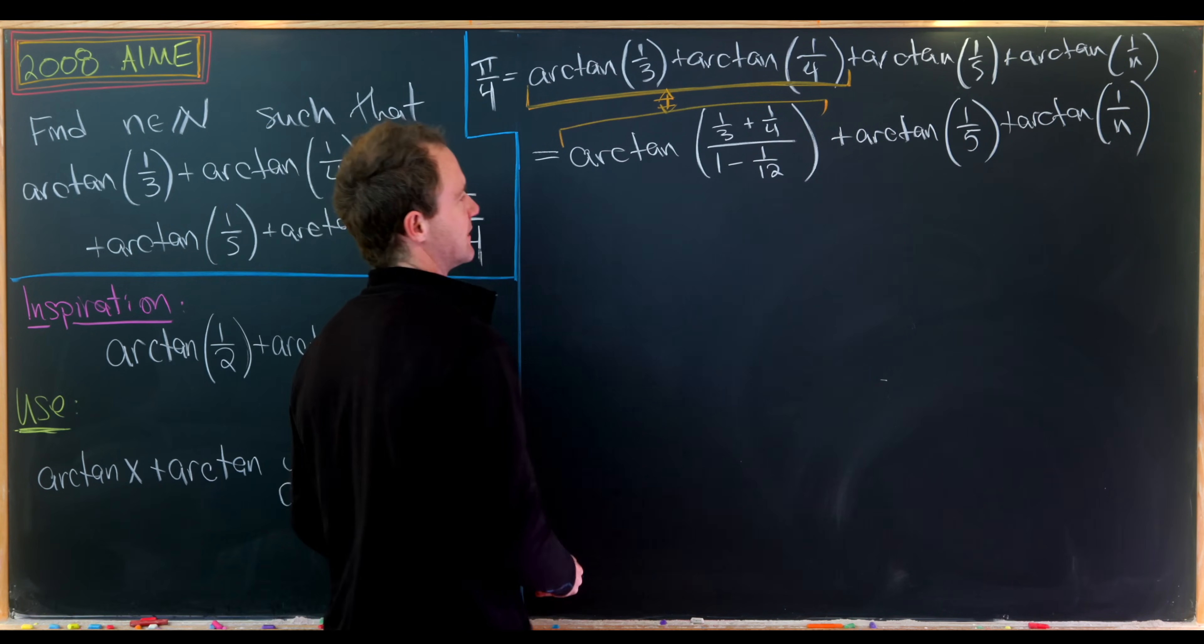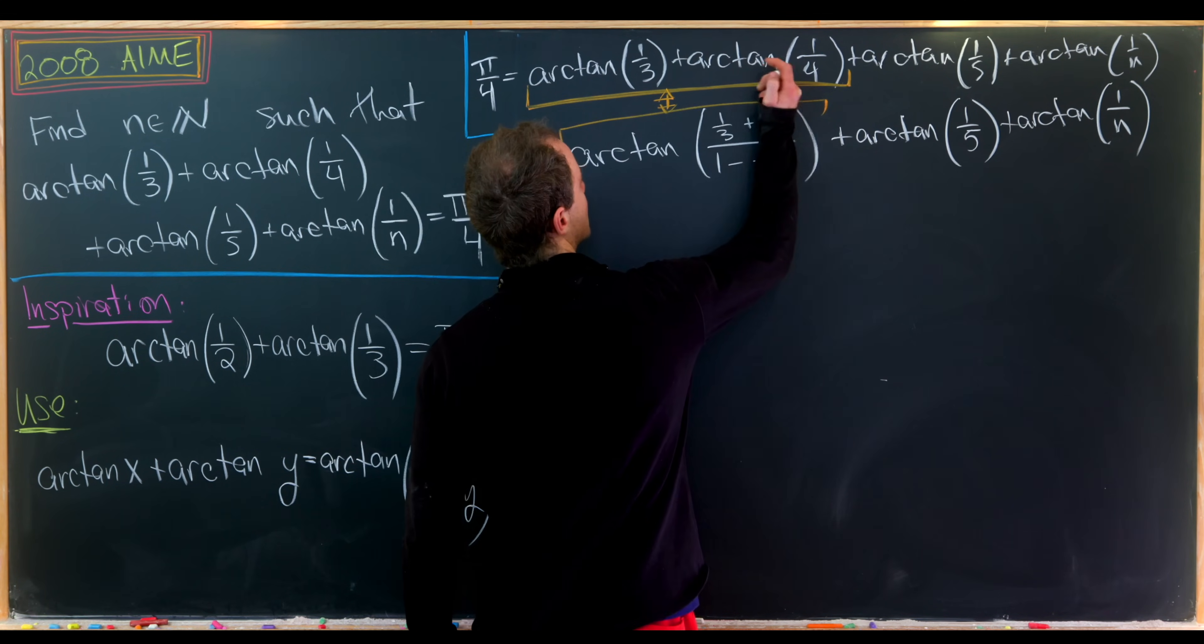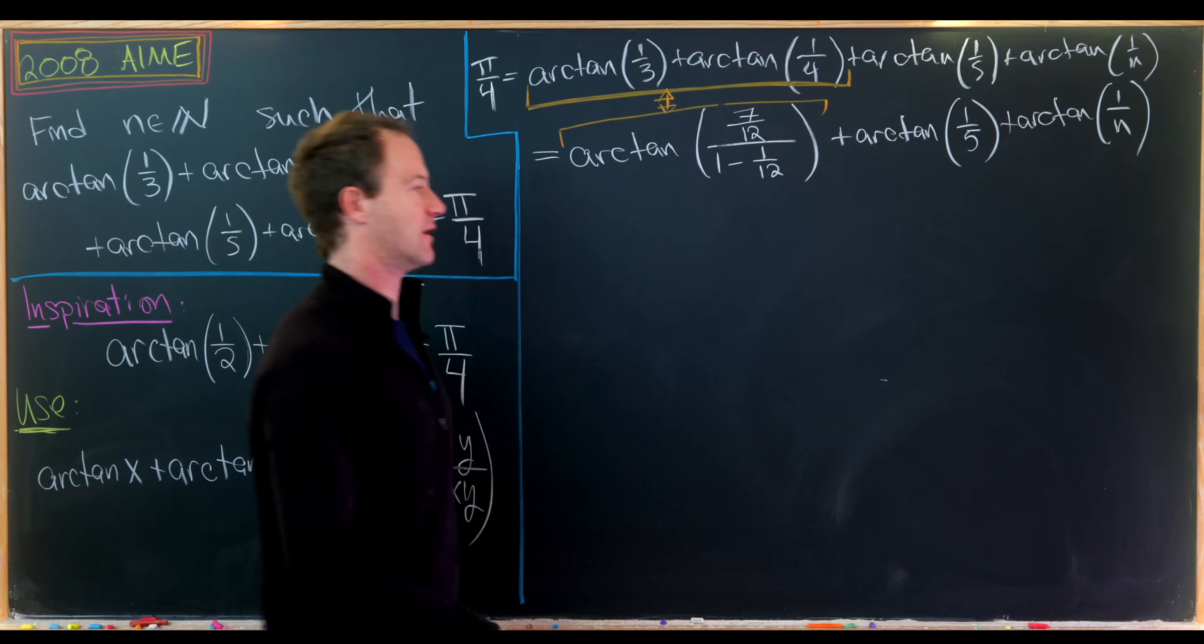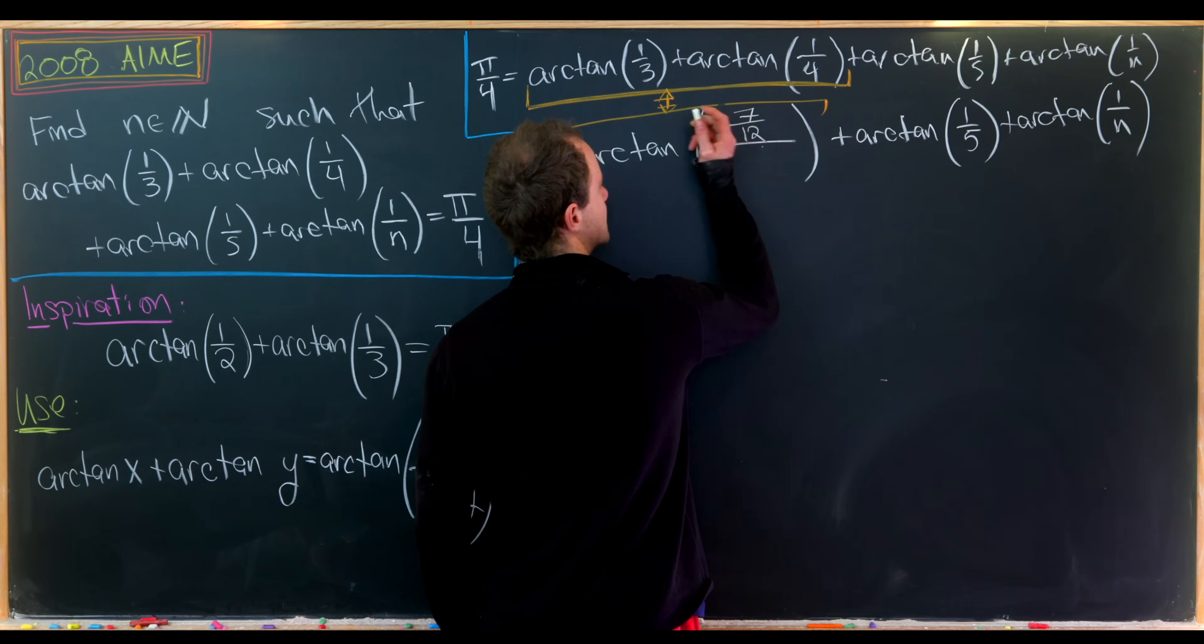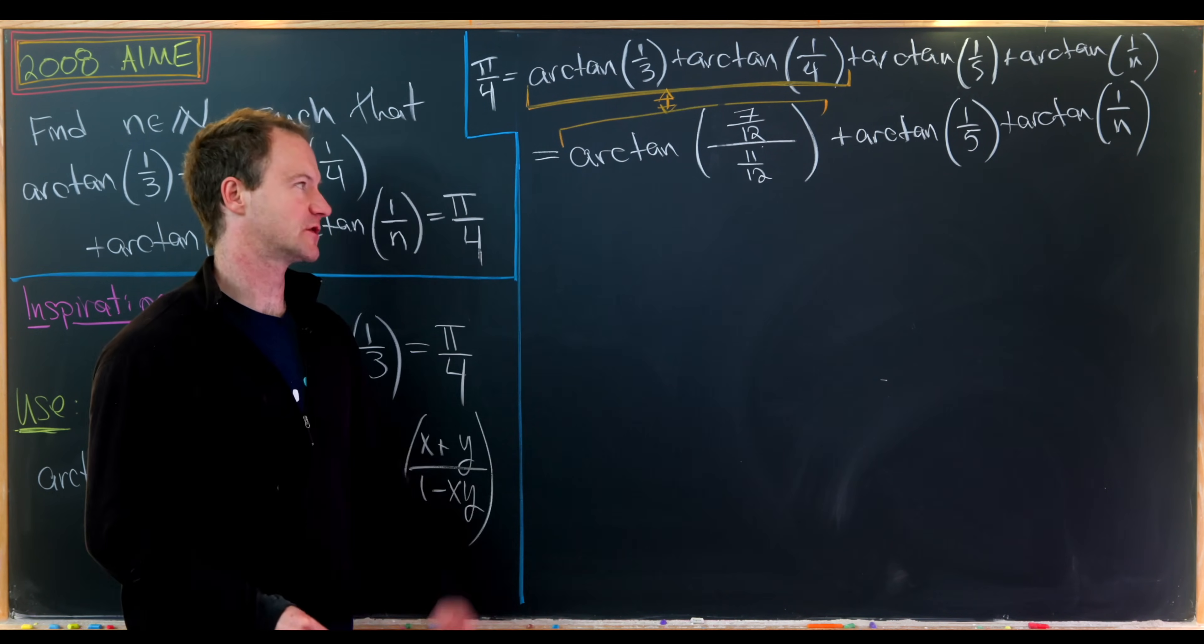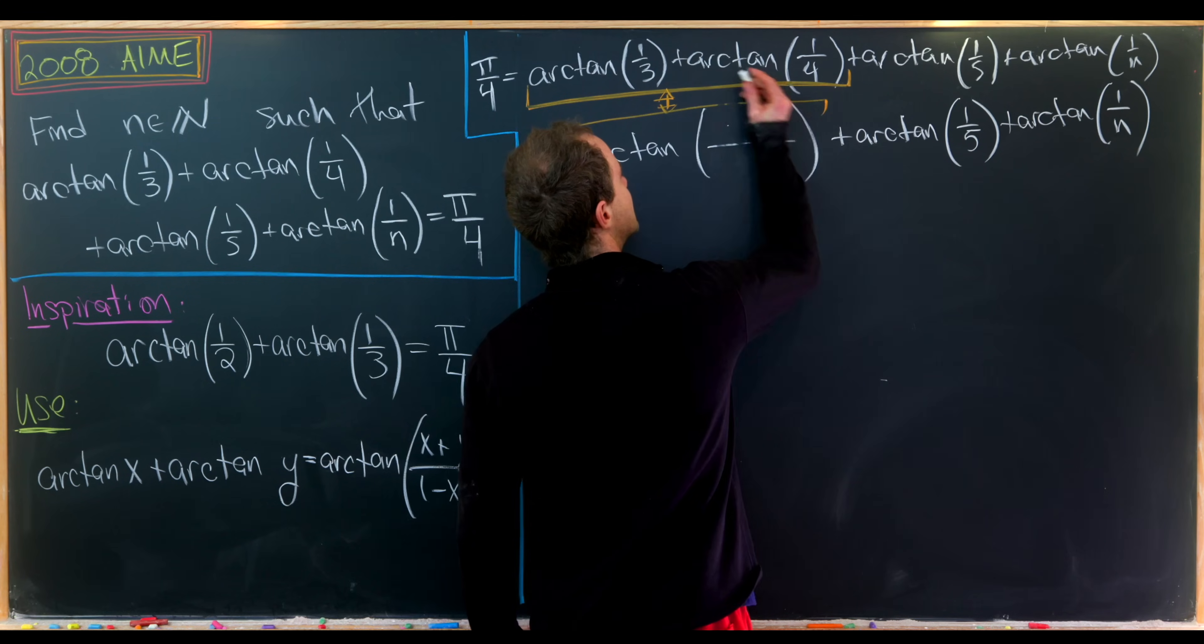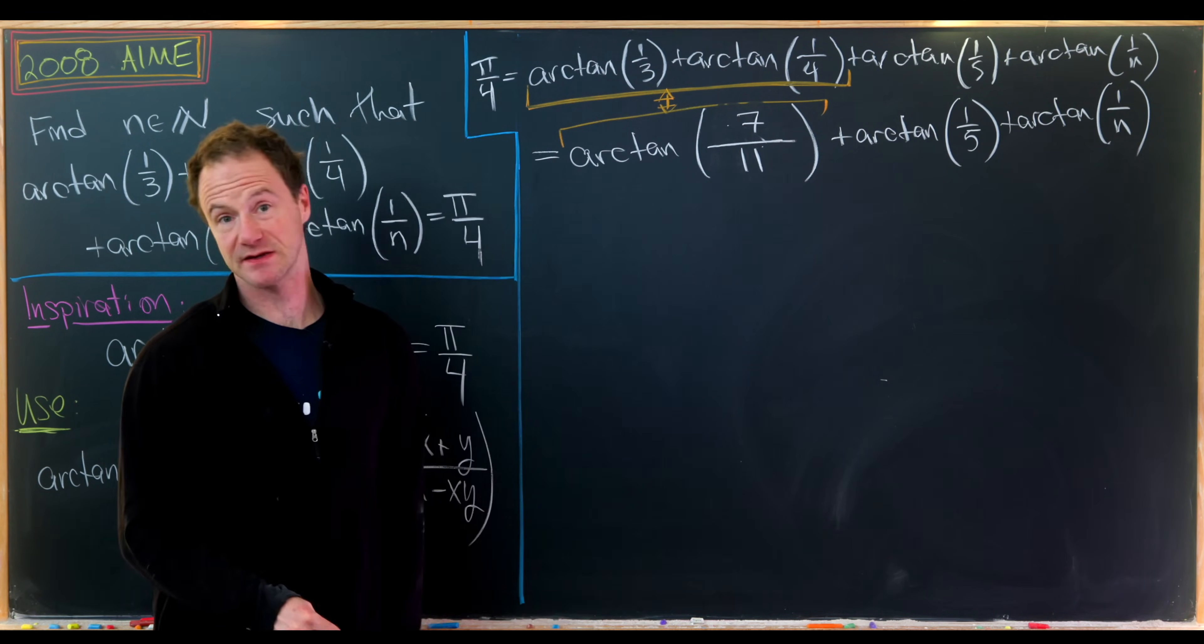Now we can do some simplification. Notice that 1/3 + 1/4 equals 7/12 by giving common denominators. Then 1 - 1/12 equals 11/12. But then 7/12 divided by 11/12 is simply equal to 7/11. There's a quick simplification.